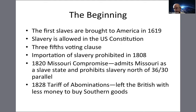The first slaves were brought to America in 1619 — the New York Times did the 1619 Project about this. Slavery was allowed in the U.S. Constitution. Although slaves couldn't vote, they were counted for allocating representatives: slaves were counted as three-fifths of a person. So the South had extra political power even though the slaves had no vote — that was the three-fifths clause.